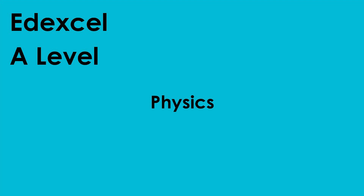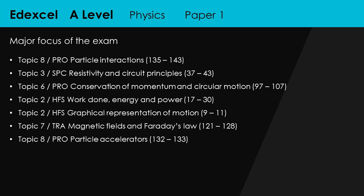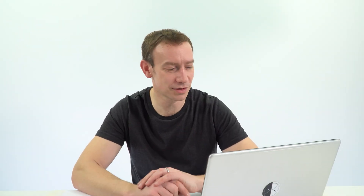If you're in year 13 doing Edexcel A-Level physics, for paper 1 there's quite a lot: particle interactions, resistivity, momentum, work done, graphical representation of motion — distance-time graphs, velocity-time graphs, and maybe even acceleration-time graphs — particle accelerators, and magnetic fields. That is your list of topics to find as many past papers as possible on.